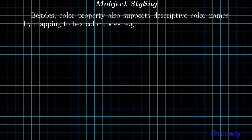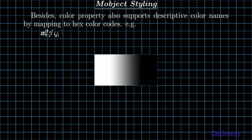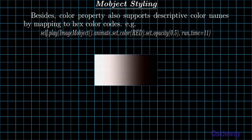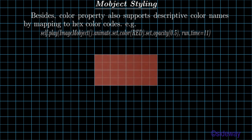The color property also supports descriptive color names by mapping to hex color codes. For example: self.play, imagemobject, dot.animate.set_color(RED).set_opacity(0.5), run_time=11.